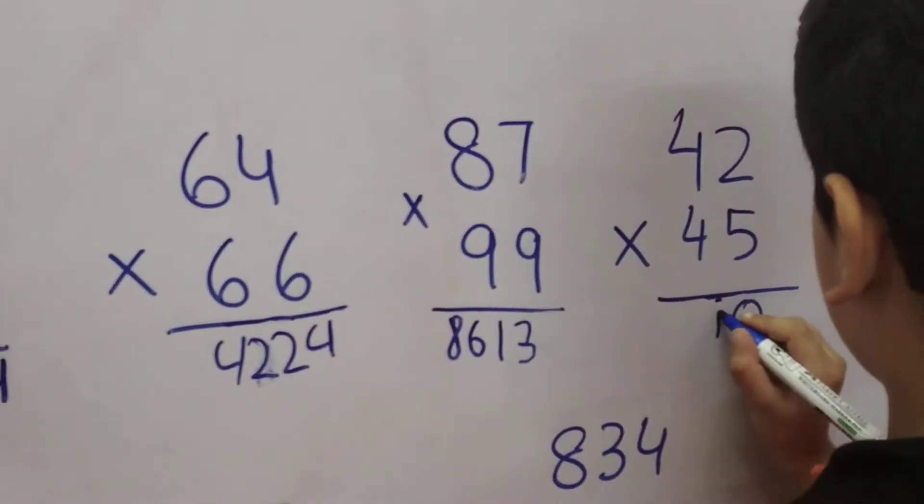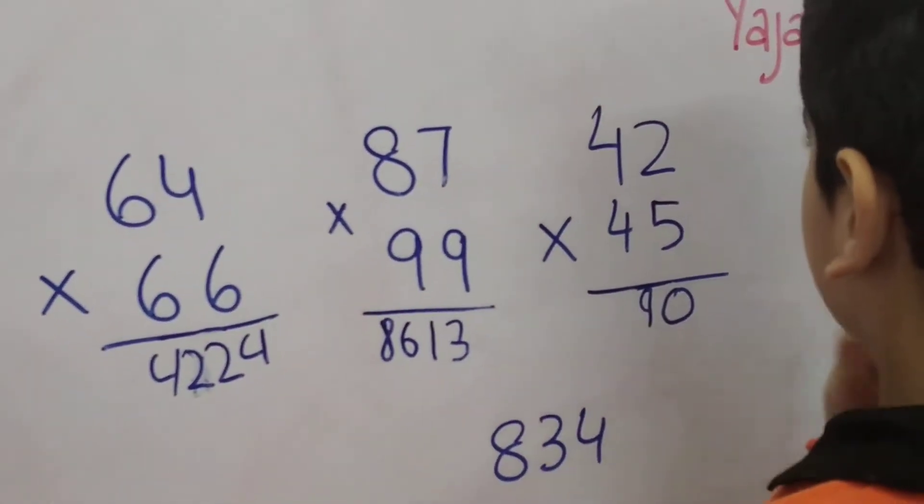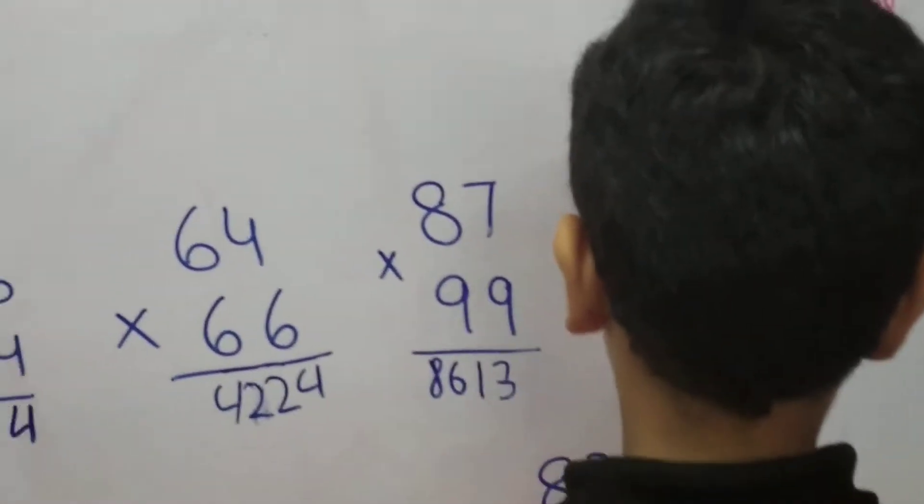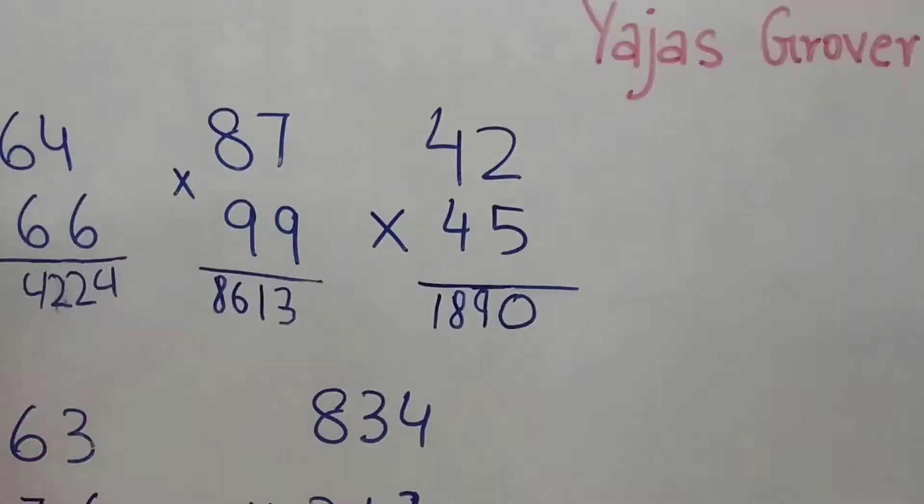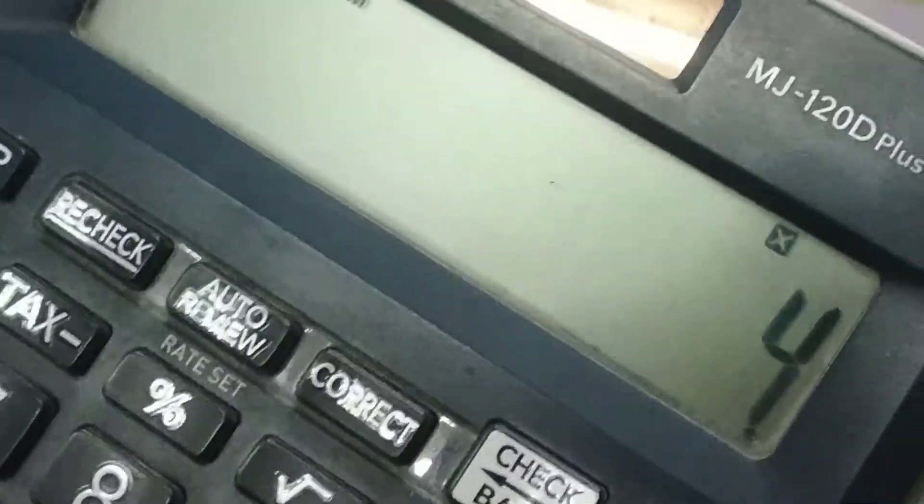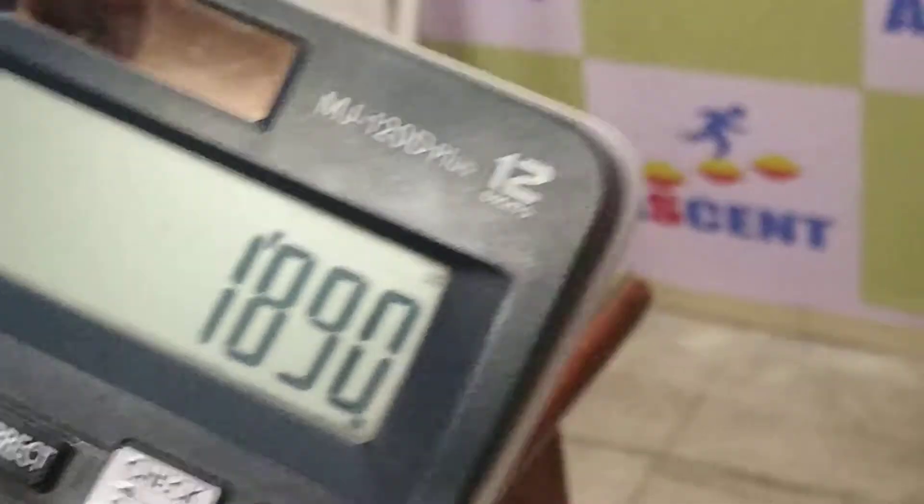It's 42 into 45. 42 into 45 is 1890. Right, wonderful.